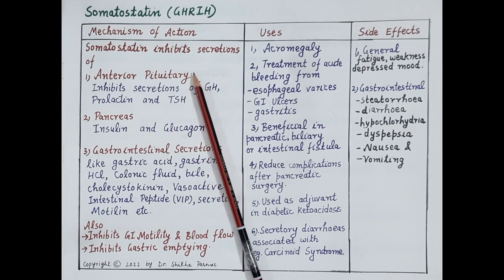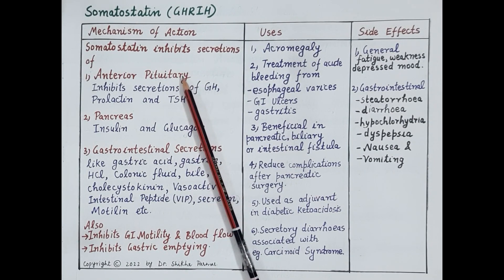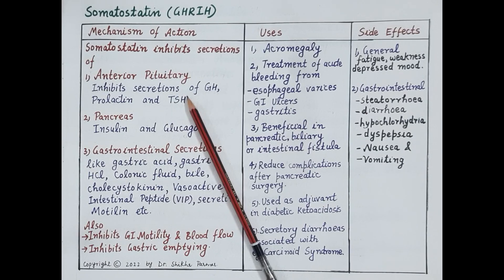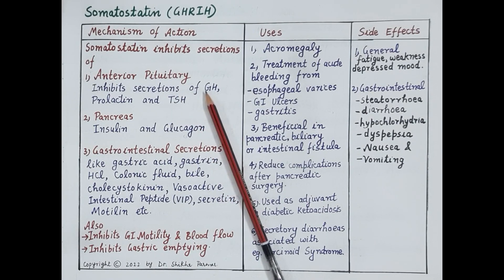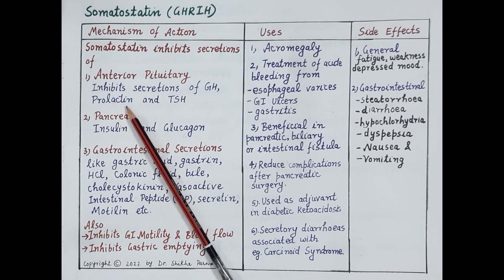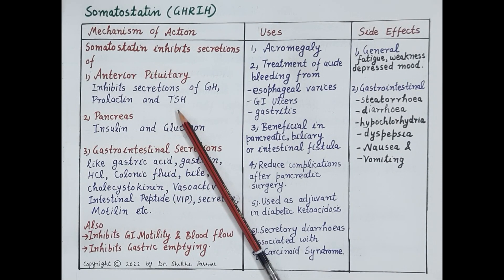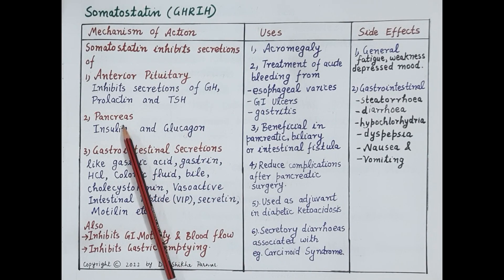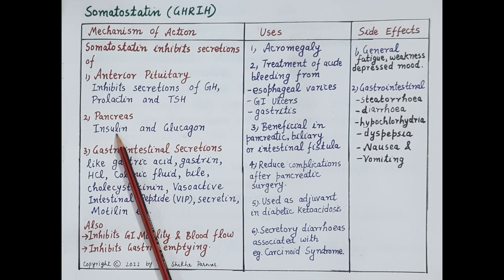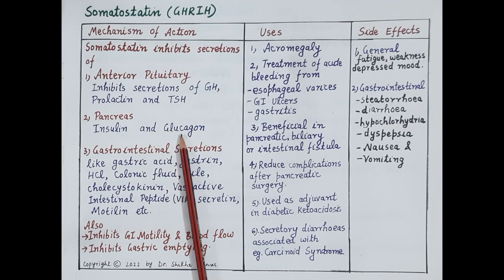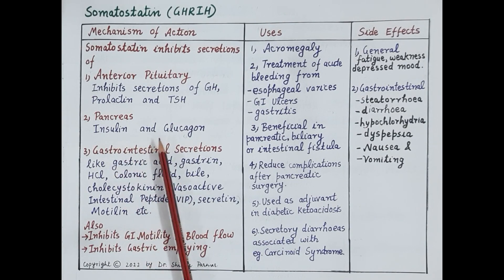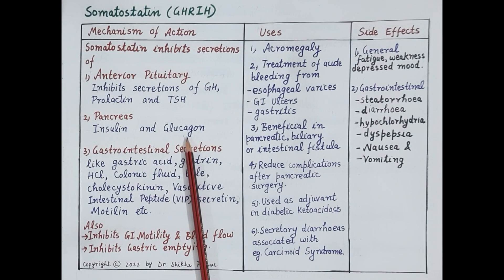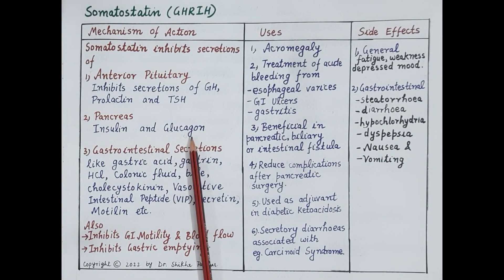A number of hormones are produced by the anterior pituitary. Somatostatin inhibits release of growth hormone, prolactin, and thyroid stimulating hormone (TSH) from the anterior pituitary. Regarding the pancreas, somatostatin inhibits secretion of insulin and glucagon — the hormones responsible for regulating blood glucose levels.